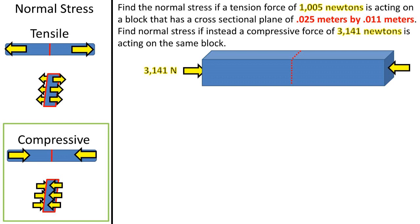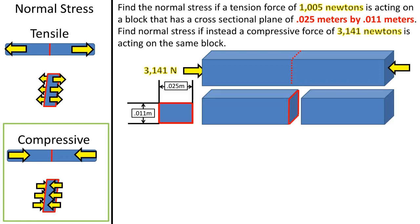Now we will complete the same problem, but this time the block has a 3,141 newton force acting in compression instead of the previous tension force. It is acting over the same cross-sectional area of 0.025 meters by 0.011 meters.